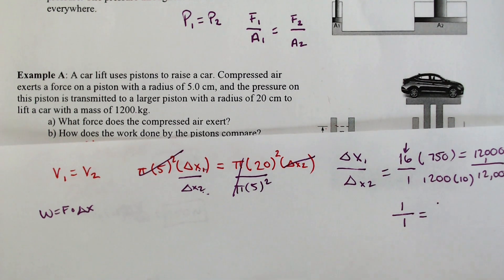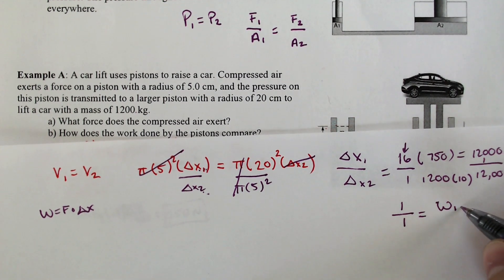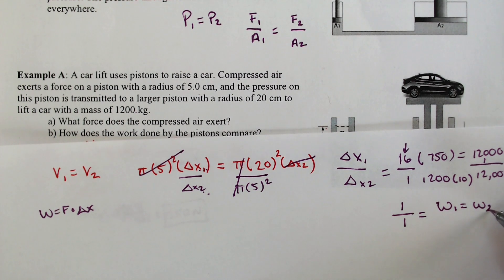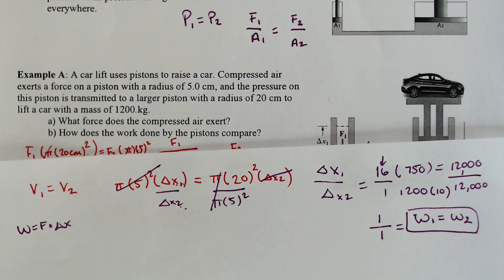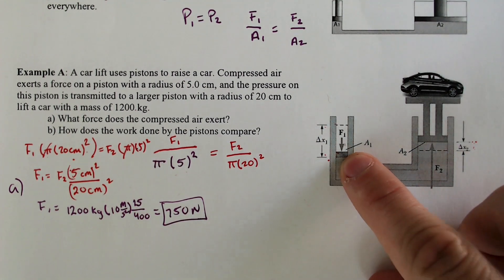If the work is 1 over 1, that means that the work done has to remain the same. And the answer to that should have been obvious from the get-go.